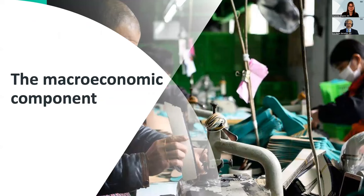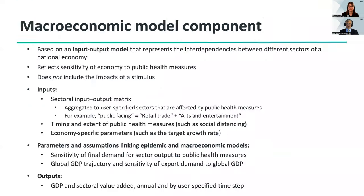The macroeconomic component is based on an input-output model. Input-output data tracks expenditure by one economic sector for goods and services provided by another, and so input-output tables represent interdependencies between different sectors of a national economy. Input-output data, or the equivalent — a social accounting matrix or supply-use tables — are becoming increasingly available for a wide range of countries. The model reflects the sensitivity of economic sectors to public health measures, which is why it must be a sectoral model.